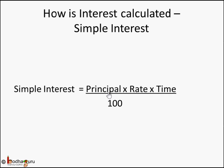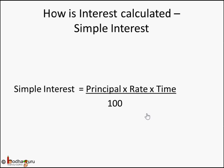Now, how is the interest calculated? Let's take the case where the interest is simple interest. The formula for simple interest is principal into rate into time divided by 100. Principal is the initial value, rate is the rate of simple interest charged, and time is the number of years or it can be number of months also.